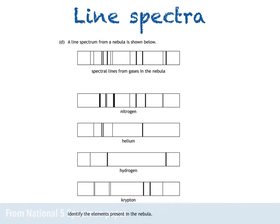Part D of the question says, a line spectrum from a nebula is shown below, and we see several spectral lines from the gases in the nebula. In case you didn't know, a nebula is basically a cloud of gas and dust in outer space.